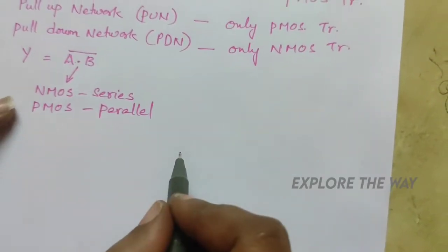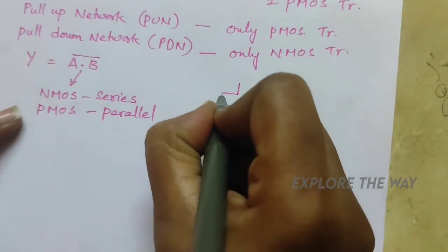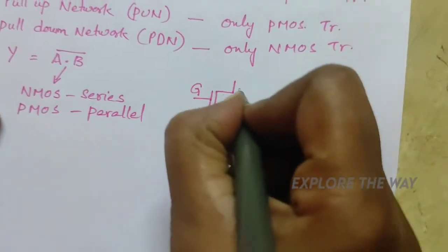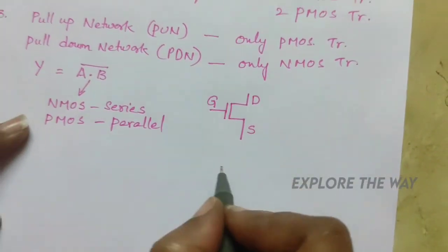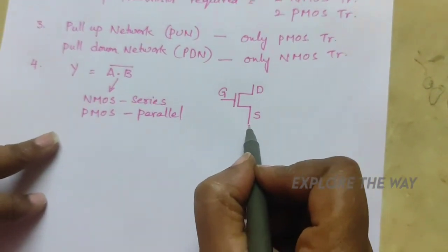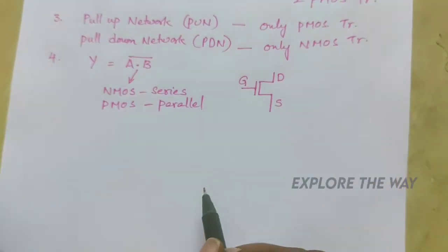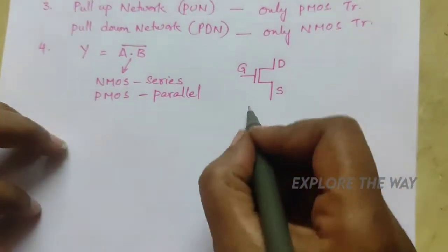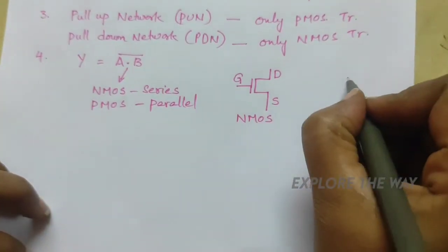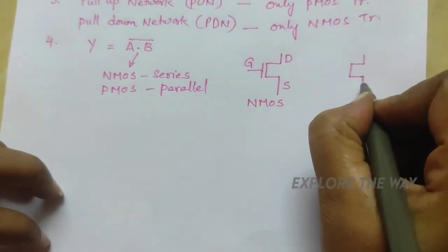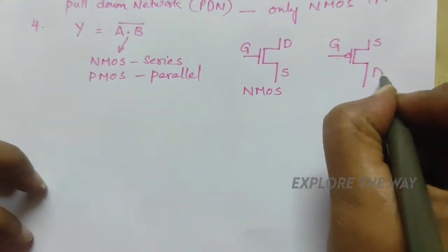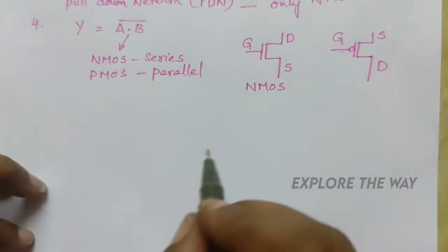Let us look at the NMOS and PMOS transistors. This is the symbol for the NMOS transistor, and it has three terminals. Generally for an NMOS transistor, the source is shown at the bottom and the drain is at the upper side, because in an NMOS transistor the drain is at higher potential than the source. Similarly, in a PMOS transistor the source is at the higher potential and the drain is at lower potential.